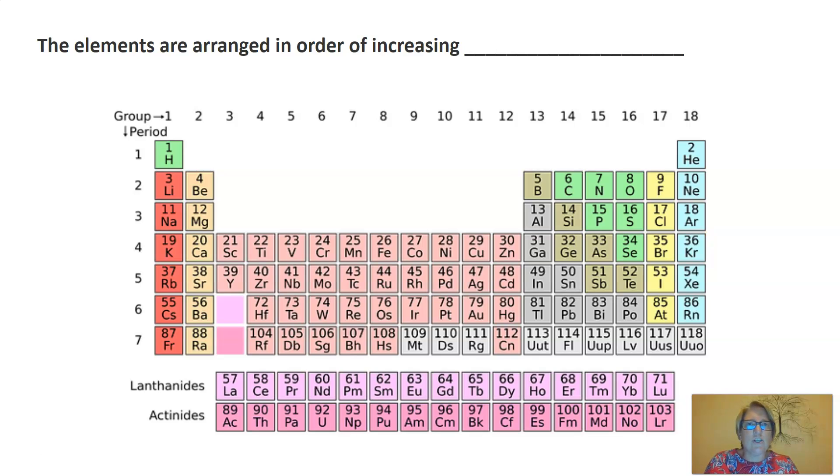Now, to answer the next question, we need to look a little bit more closely at the periodic table. It says the elements are arranged in order of increasing. Let's see if we can work it out. For now, I don't want you to focus too much on the numbers that go down the side here, or the numbers that go horizontally across the top. We'll learn about that later in the series of lessons. But I want you to look more closely at each of the elements.